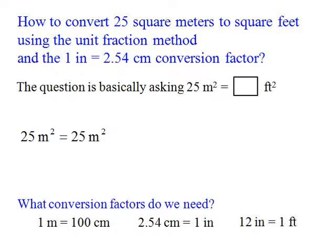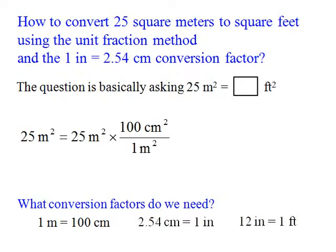Now, do you agree that 25 meters square equals 25 meters square? And it's also equal to 25 meters square times one. This is the idea of the unique fraction method — we multiply by fractions equal to one without changing the value.